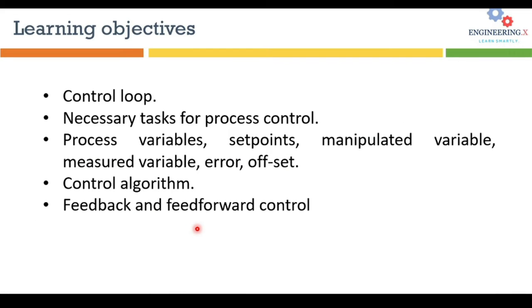The learning objectives for this tutorial are: number one, what is a control loop and what are the necessary tasks that must be performed to complete a process control loop. Then we will see different definitions of terms like process variables, setpoints, manipulated variables, measured variables, errors, and offsets. Then we will see the control algorithm — what it is and how to write it — and finally we will see what is feedback and feedforward control loop strategy and their specific advantages and disadvantages.